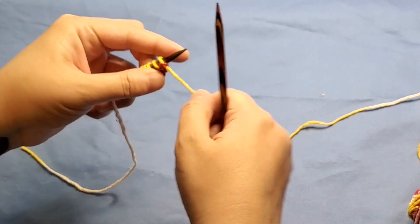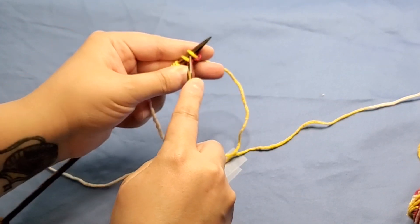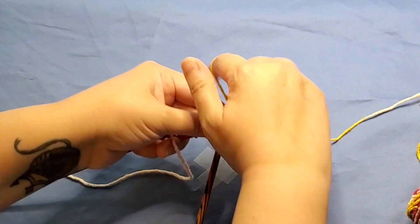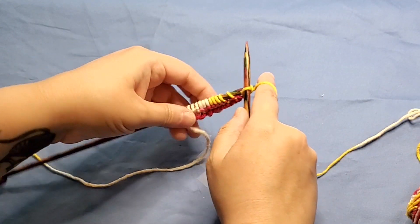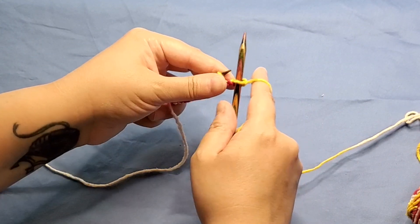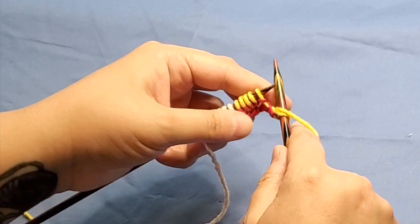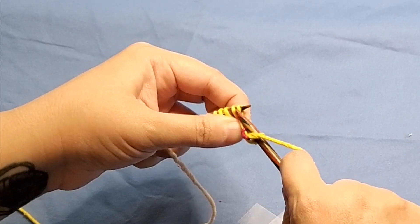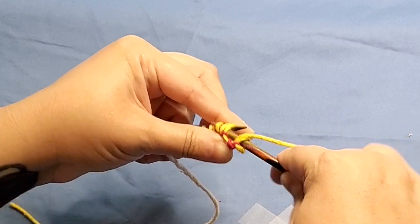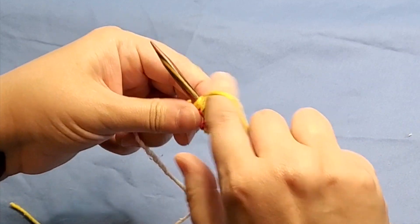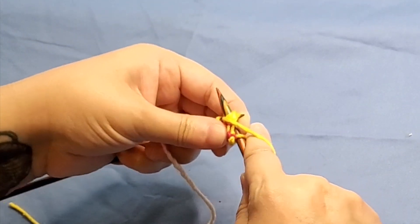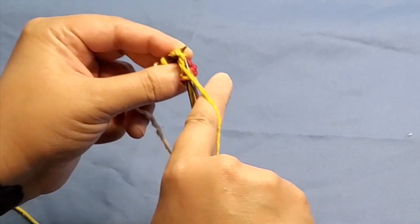My next row is knit one. And then this is where you get into the daisy stitch. You're going to purl three together. One, two, three. You're going to purl those three together. Do not slip the stitches from the left off.